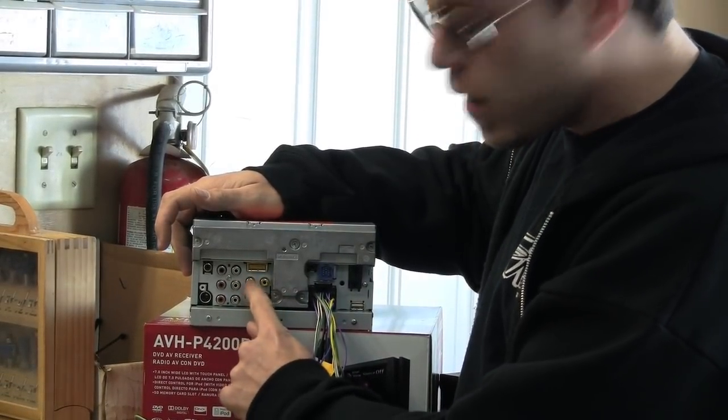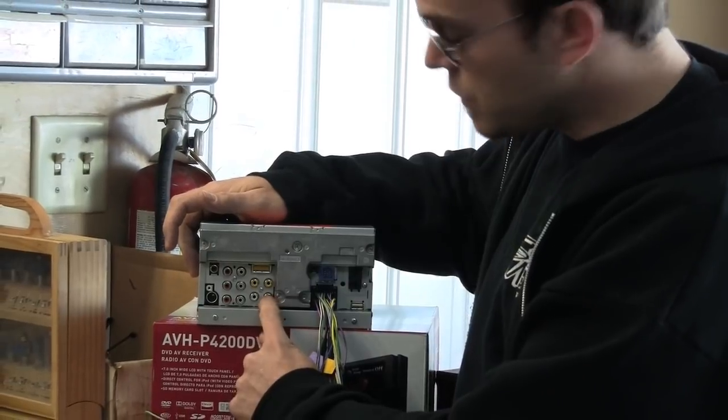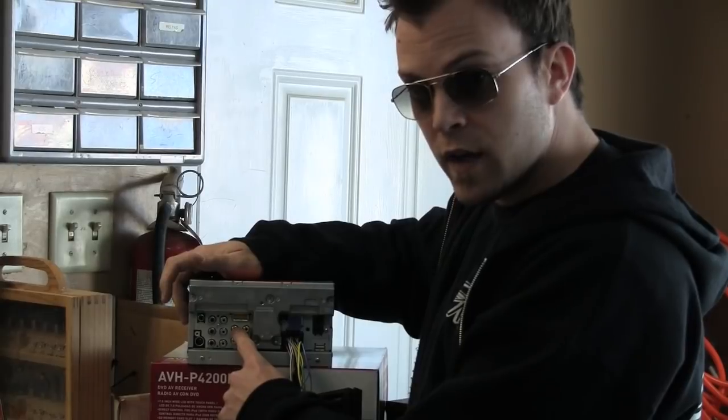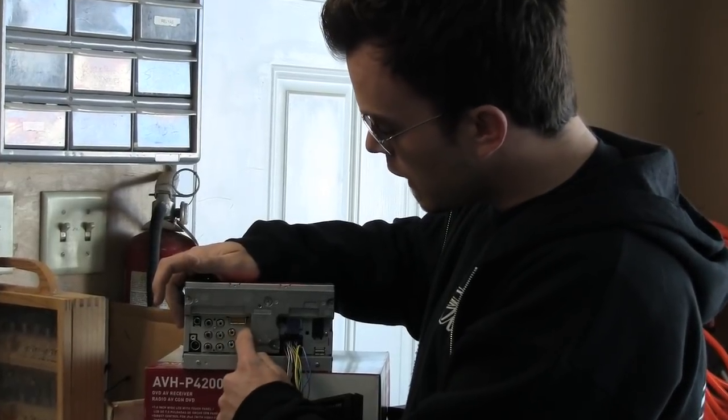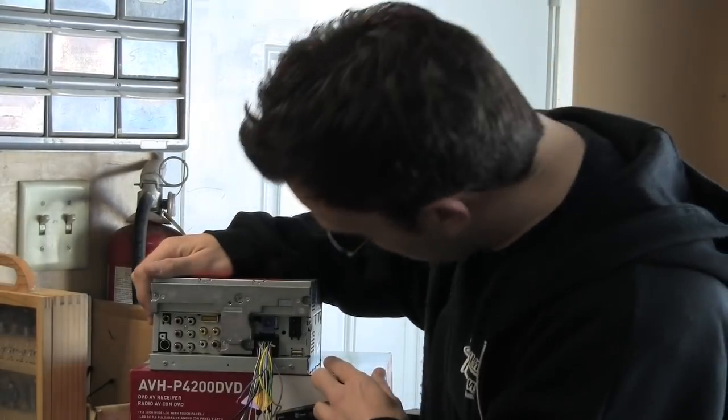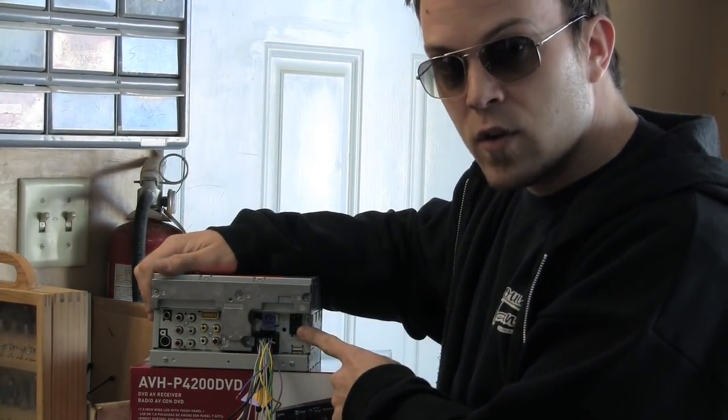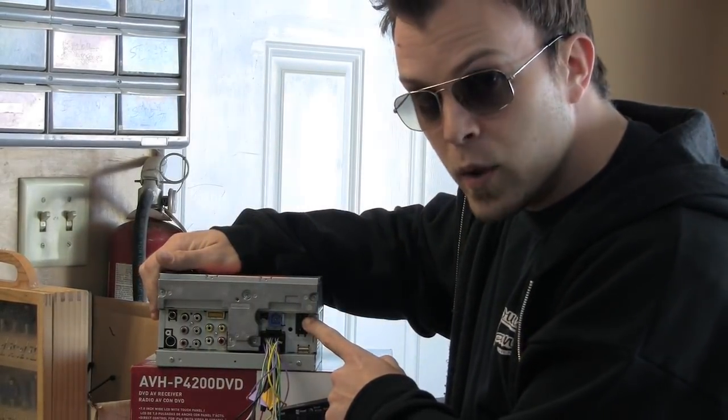These three plugs right here are audio and video inputs. So you can hook up a video game system, PS3 or Xbox 360 or something. You got your video in and your audio in. Here you have a rear video out for a rear screen. And over here, there's a rear audio out. So you can hook up like a wireless headphone transmitter to it.